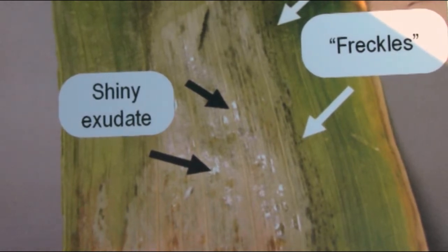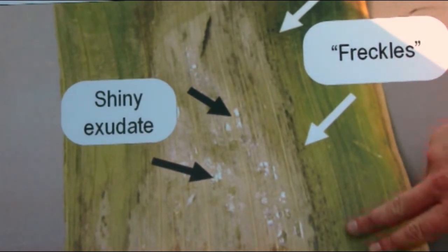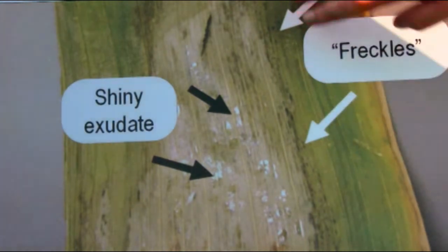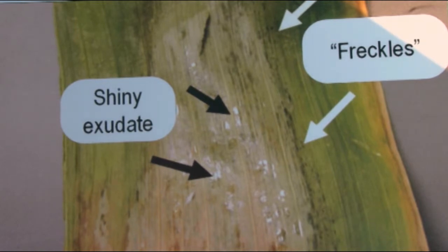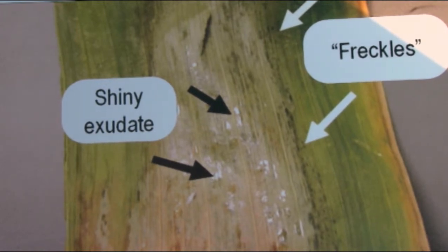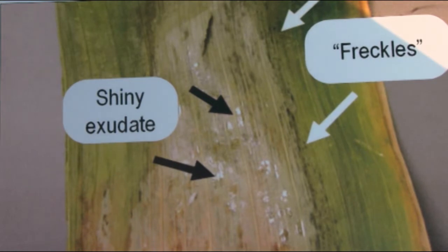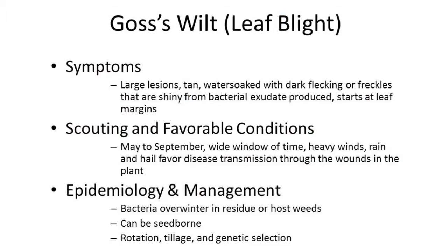Another common symptom of Goss's wilt would be the black freckling along the edge of the actual lesion. This disease can commonly be mistaken for other types of nutrient deficiencies or possibly sun scald, so it's a tough disease to identify. As far as scouting and favorable conditions, there's a wider window of time — we look for Goss's wilt in the months of May to September, a little wider window than some other corn leaf diseases.